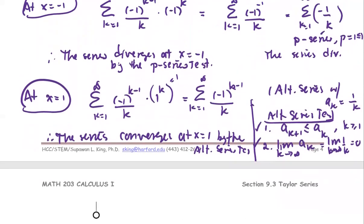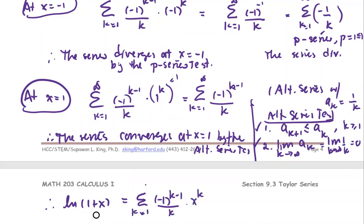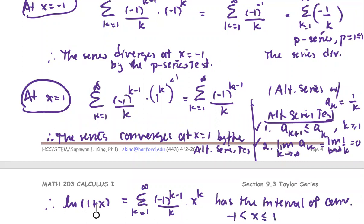In summary, the natural log of one plus x as the Maclaurin series, summation of negative one to the power k minus one over k times x to the power k from k equals one to infinity, has the interval of convergence: negative one not included, to positive one included, i.e., the interval (-1, 1].